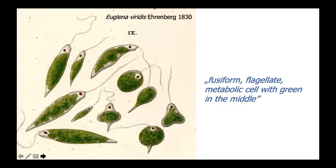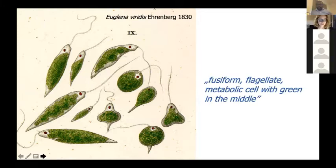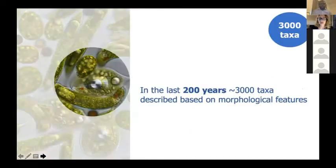Another thing you can already observe on this very first, very beautiful drawing is that even within one species there is a huge variation of morphology, especially in cell shape and size. That's probably one of the reasons — this huge variation within the level of the species, as well as relatively easy access to these cells because they are widespread in fresh waters — that we have so many taxa.